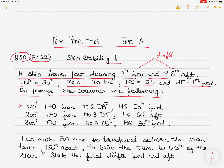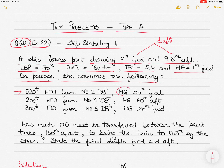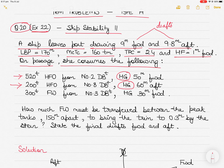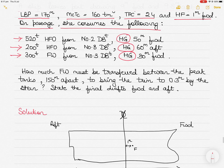She consumes 520 tons of HFO from number 2 double bottom tank; HG is 50 meters forward — H is midship, G is the center of gravity, so the longitudinal distance between midship and center of gravity is 50 meters forward. Then 200 tons of HFO from number 8 double bottom tank, HG is 60 meters aft. And 300 tons of fresh water from number 3 double bottom tank, HG is 30 meters forward.